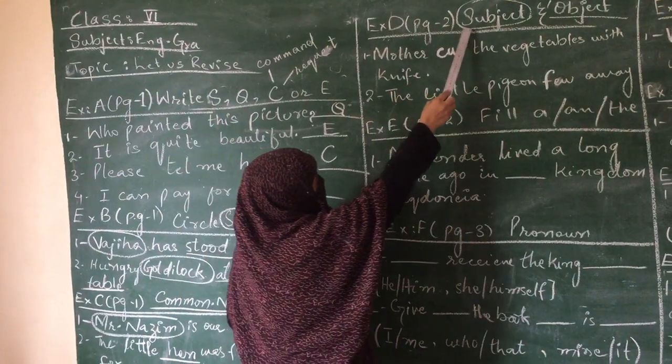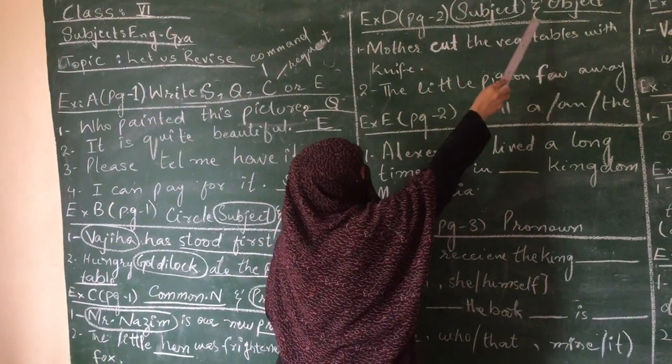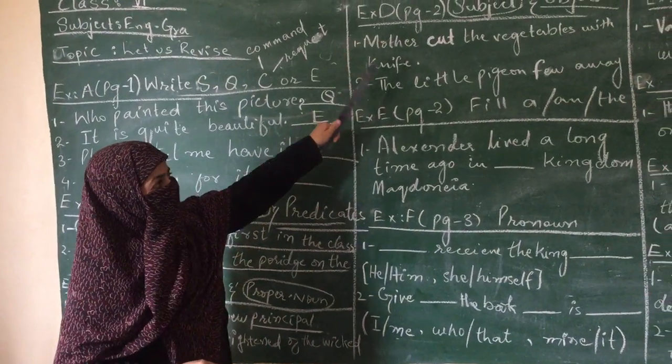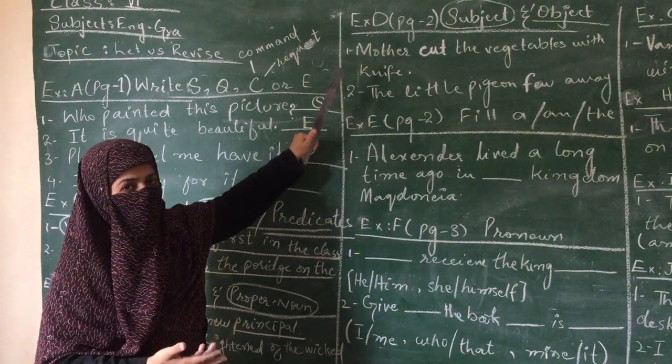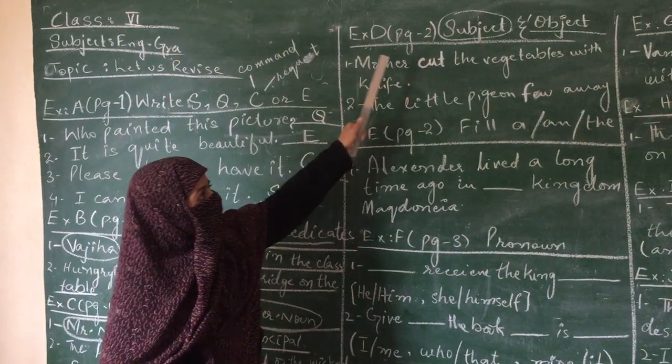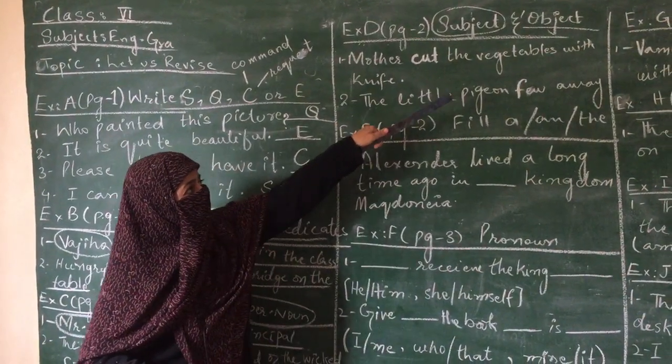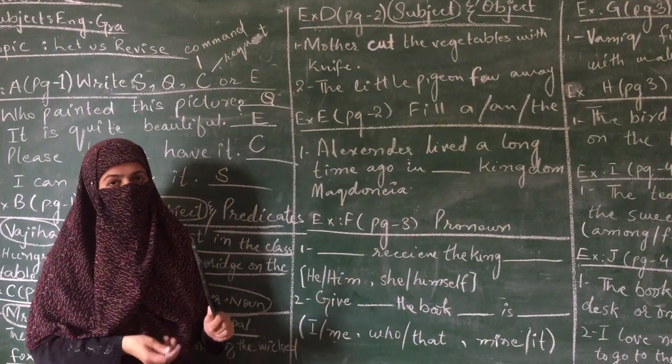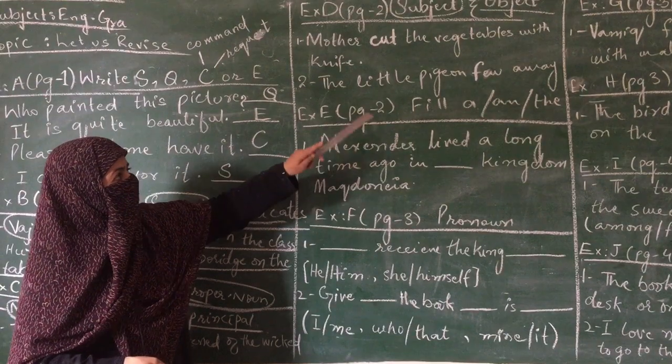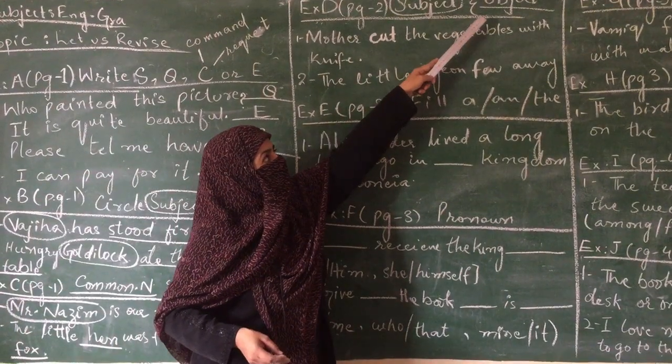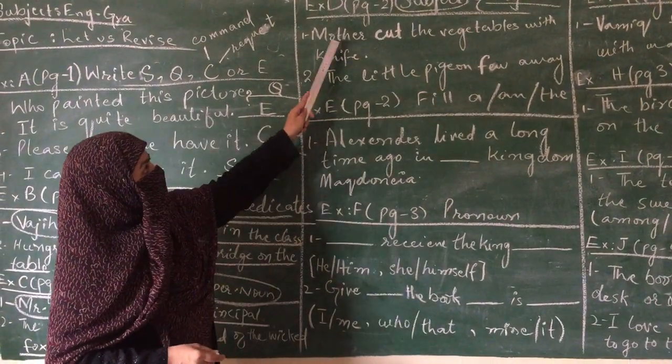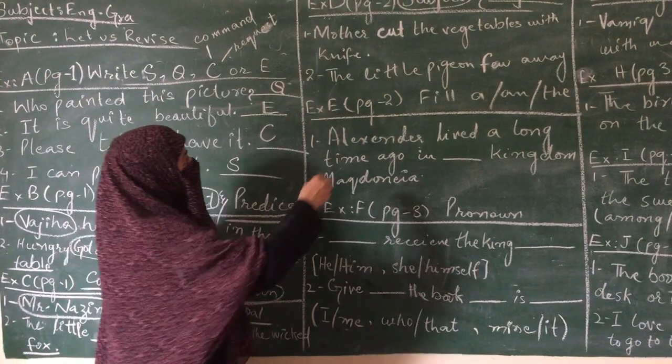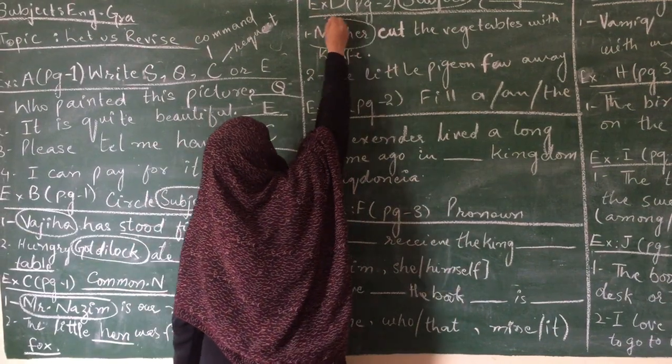Now in exercise D, we are going to circle subject and underline object. Subject means what we are talking about. And object relates to the verb. What is verb? The doing word that tells us what action is being done. Whatever relates to that verb will be our object. Look here: Mother cut the vegetables with knife. So our subject is mother. We are going to circle the word mother.